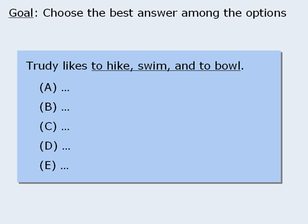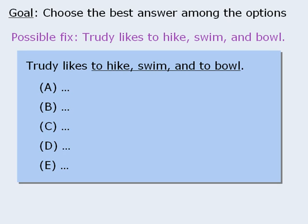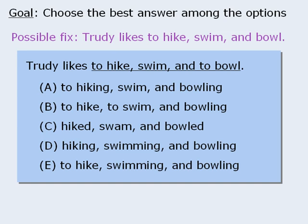'Trudy likes to hike, swim, and to bowl.' This sentence has a problem with parallelism, and in future lessons you'll learn that when we have a series of similar elements, we should express those elements in similar form. An easy fix would be 'Trudy likes to hike, swim, and bowl.' However, this does not mean that one of the answer choices will match this particular fix. For example, the answer choices could look something like this — and the best answer among them is D: 'Trudy likes hiking, swimming, and bowling.' There are many different ways to fix a broken sentence, especially when those sentences are much more complex.